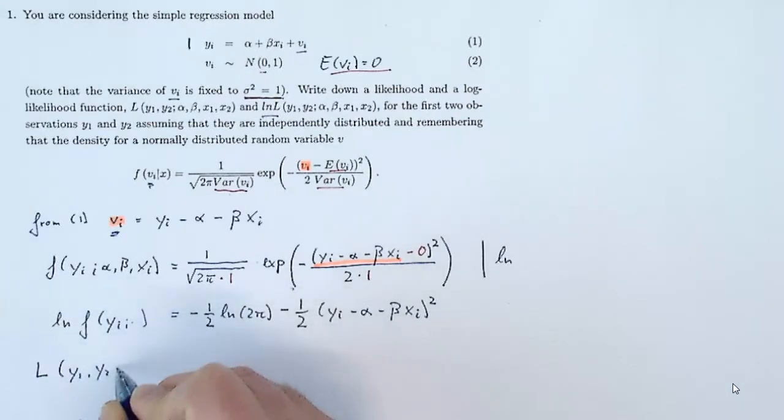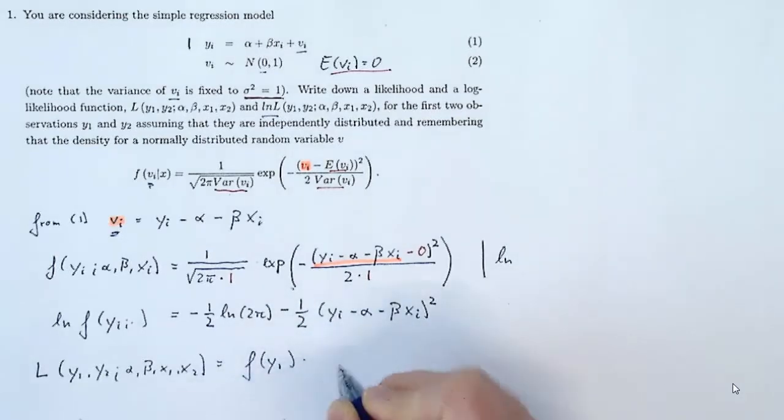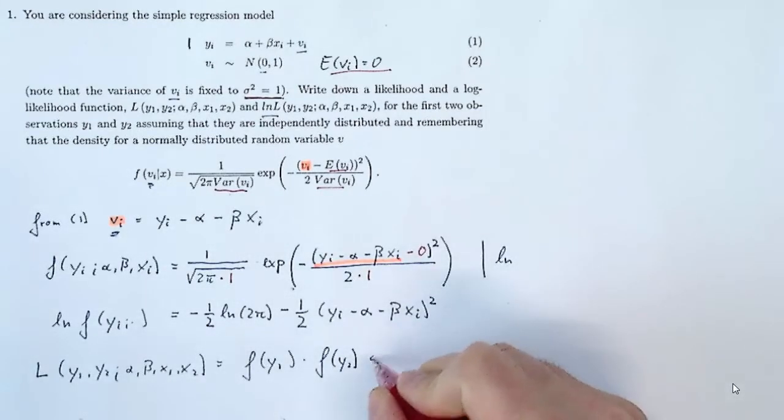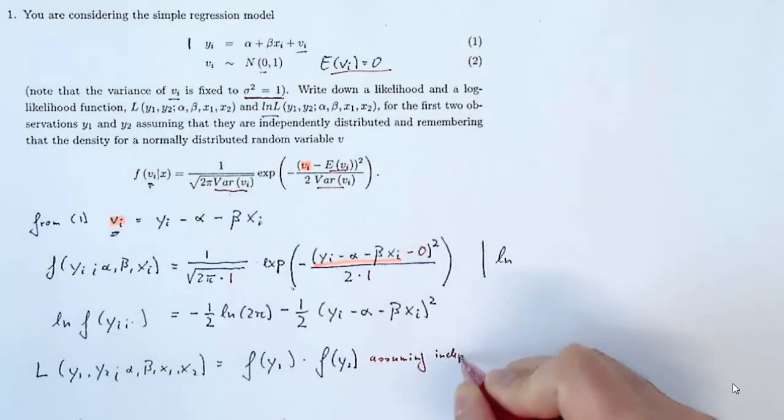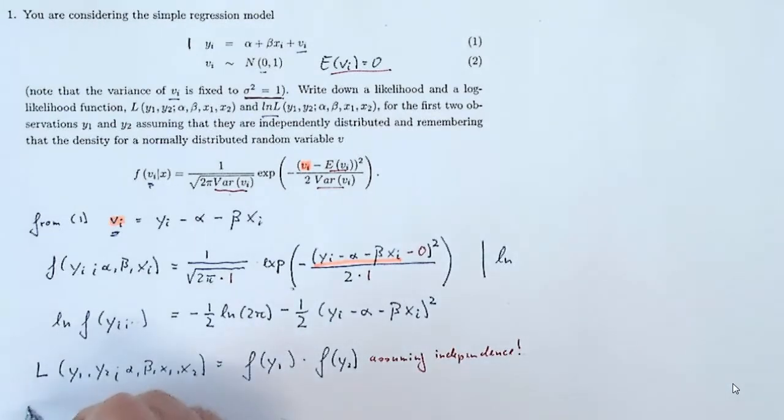If you take the log, you will need to know all the calculation rules for logarithms. You get negative 1 half times the log of 2 pi minus 1 half times yi minus alpha minus beta times xi squared. That was the density for an individual yi. Now we want the likelihood function.